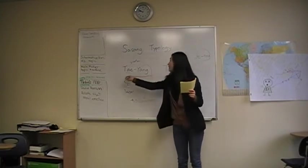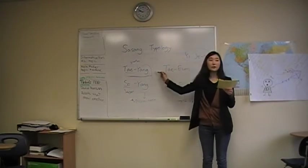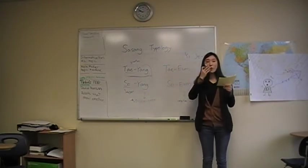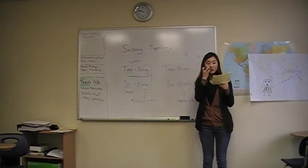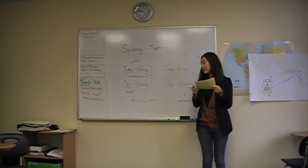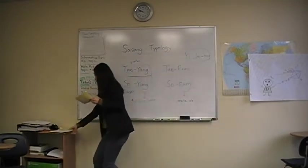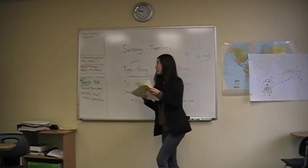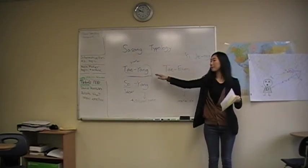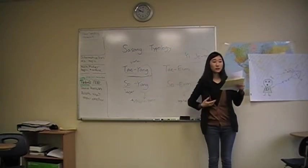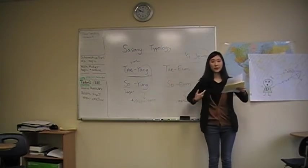First, these kind of people have wide face and flat foreheads and nose are not too big but not too small. And actually, Taeyang and Taeyang are opposite. So they have the strong function of lungs, the upper side of body, and weak function of liver, like lower side of our body.